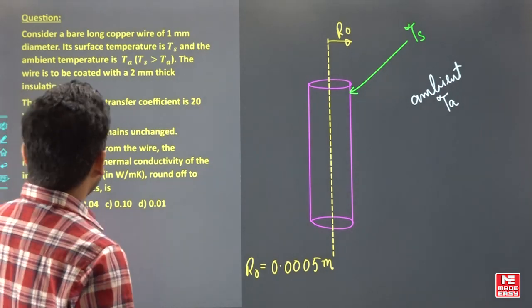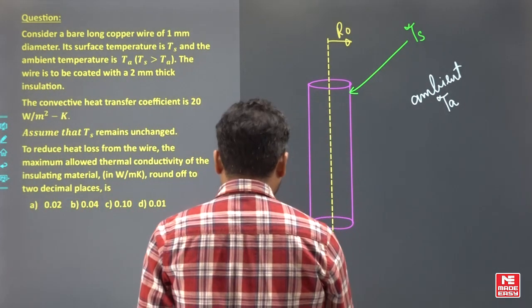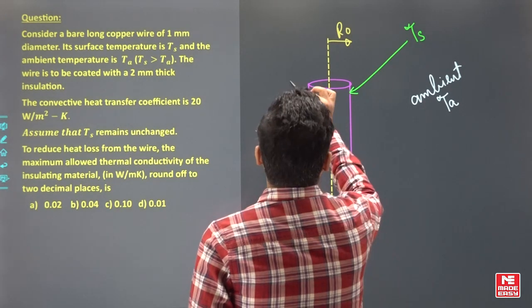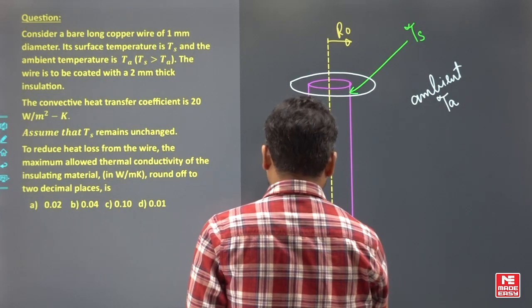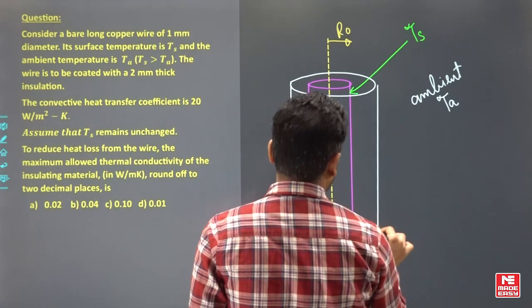The wire is to be coated with a 2 mm thick insulation, so there's a 2 mm thick insulation on it. There's an insulation on it, 2 mm insulation, something like this.